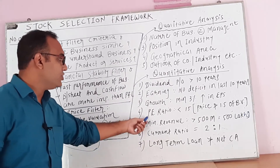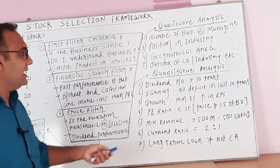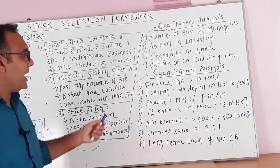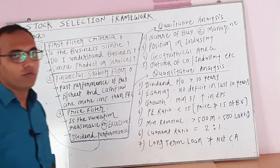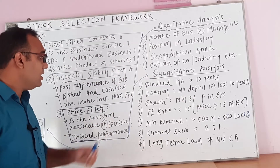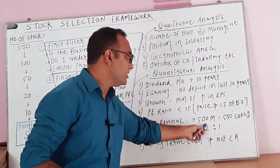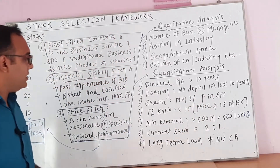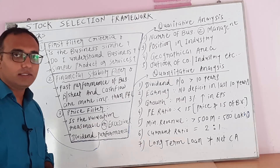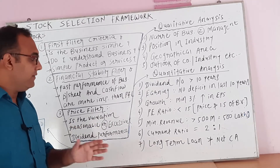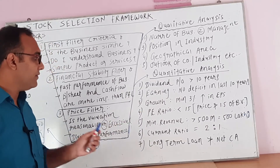Number four, P/E ratio — the price-to-earnings ratio must be less than 15 times, or the price of the stock should not exceed 1.5 times the book value. Number five, minimum revenue — the company's minimum revenue must be more than 500 million (equals to 500 lakhs). Number six, current ratio — current assets are compared with current liabilities. If the current ratio equals 2:1, meaning current assets are two times the current liabilities, the company is at a better stage.